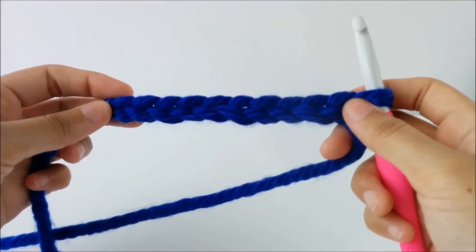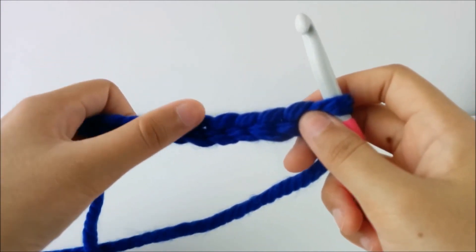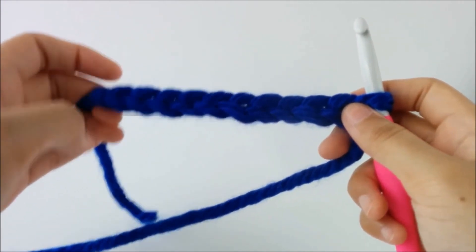So here's my chain so far. Let's see how many stitches I have. And you can count these stitches by counting this v-shape that it makes. That's how you know how many you have.